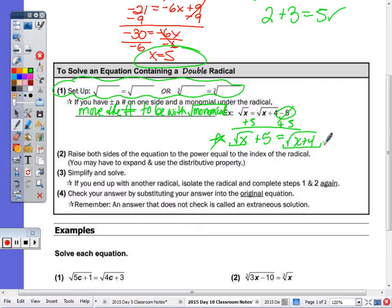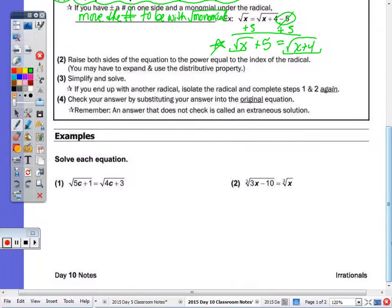Step number two, we're still going to raise both sides of the equation to the power of the index. You may have to expand, which means to write it out twice, and then possibly do a distributive property. Simplify and solve. If you end up, this is the case where when I actually do what we did above and we remove the radical, you may still end up with another radical. So we'll just have to not square just once, but twice. So number four, remember to check your answer. We're going to check the first few.